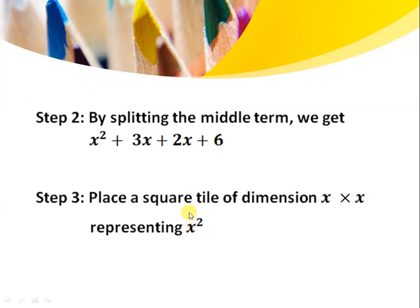Now the next step: by middle term splitting of this quadratic polynomial, I get x squared plus 3x plus 2x plus 6. So my first step is to represent x squared by a square tile of dimension x cross x. Then I will represent 3x, then 2x, and finally 6.